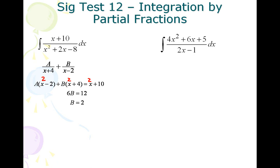The next thing I would do is plug in negative 4 because that will make my B term go away, so I'll get negative 6A and I will get positive 6. So A equals negative 1.